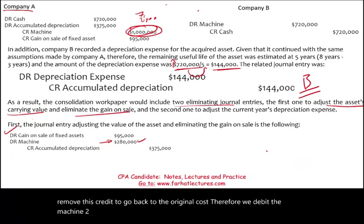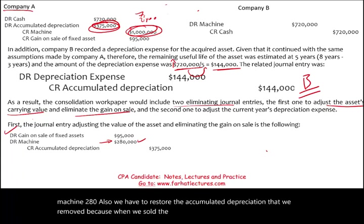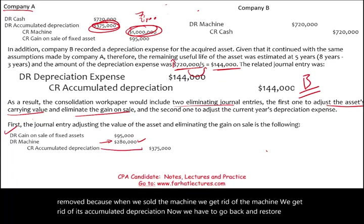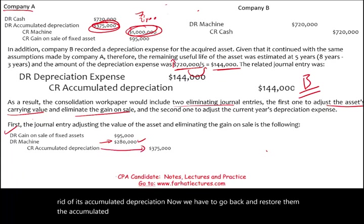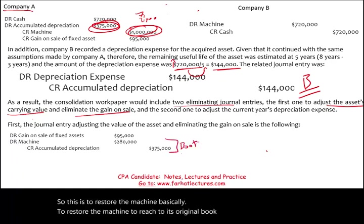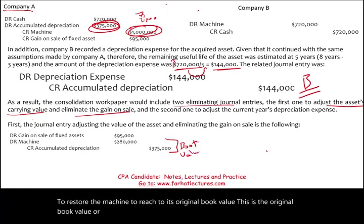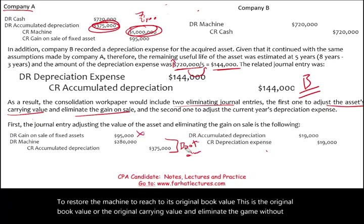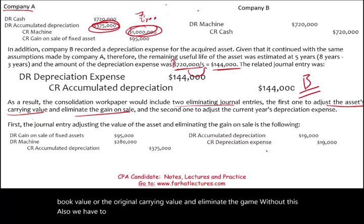We also have to restore the accumulated depreciation that was removed. When we sold the machine, we removed both the machine and its accumulated depreciation. Now we have to go back and restore that accumulated depreciation with a credit. This restores the machine to its original book value — its original carrying value — and eliminates the gain. We also have to book the difference in depreciation expense.